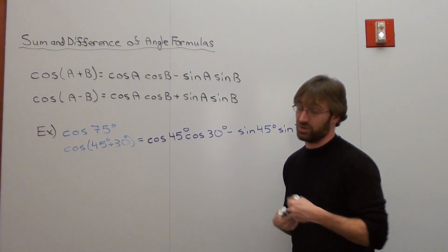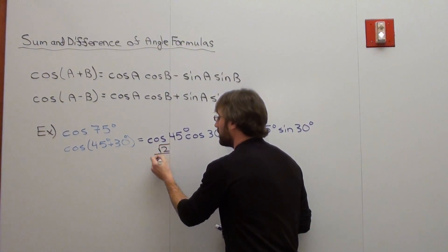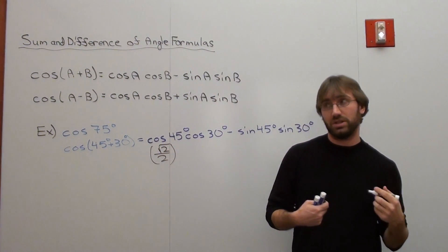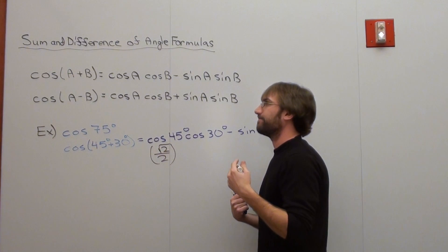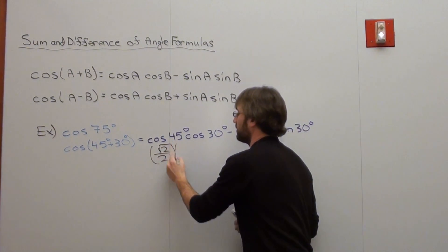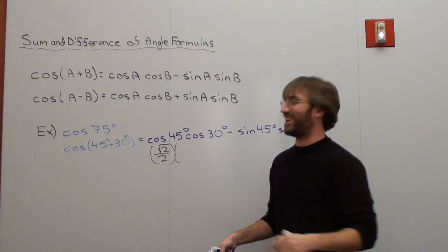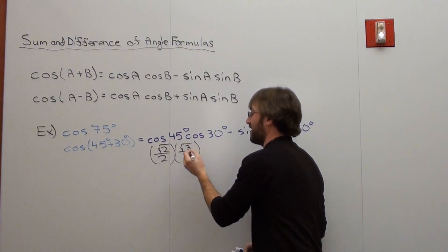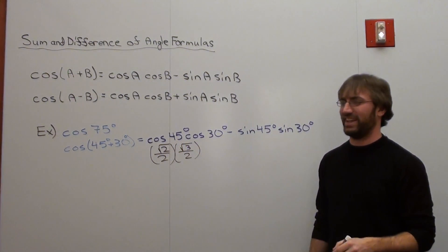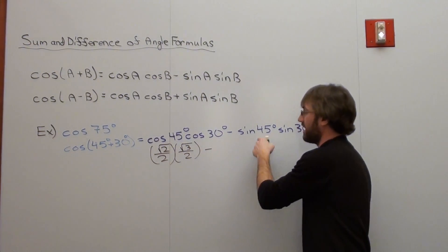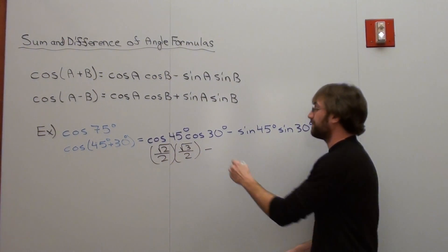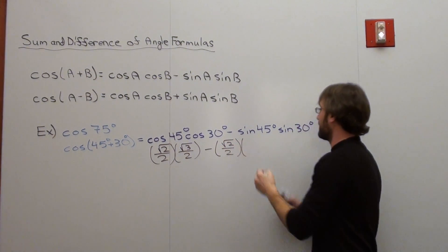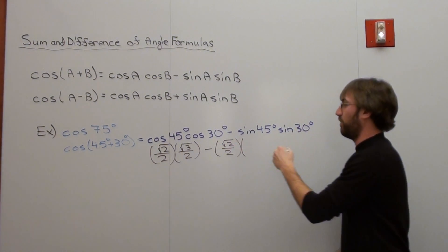So, anyways, the cosine of 45 is root 2 over 2, times cosine of 30, which is root 3 over 2. Pardon me, that took a little bit longer than I wanted it to. Subtracted by the sine of 45, which is root 2 over 2, times the sine of 30, which is 1 half. That one is 1 half.